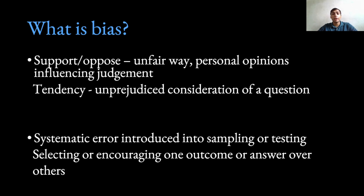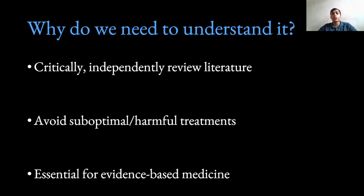Bias can also be defined as a tendency which can lead to unprejudiced consideration of a question. Systematic error which can be introduced into sampling or testing is known as bias in research. It can also be defined as selecting or encouraging one outcome or one answer over the others. We need to understand bias so that we can critically and independently review literature, avoid suboptimal or harmful treatments, and because understanding bias is essential for evidence-based medicine to flourish.